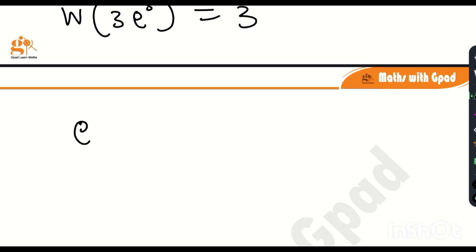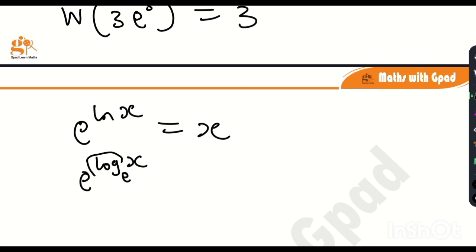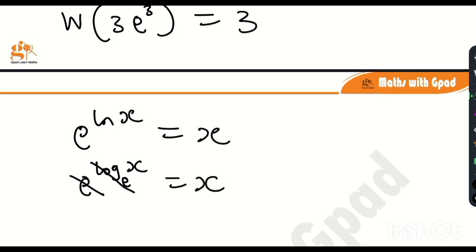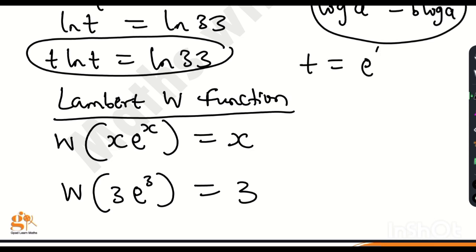Here's the key identity: e^(ln x) = x. This is because ln has base e, and since the base matches, they are inverse functions and cancel out. This means I can rewrite t as e^(ln t), because the natural log within will cancel the e, giving back t. So I'll replace t with e^(ln t) to introduce e into the equation so we can apply the Lambert W function.